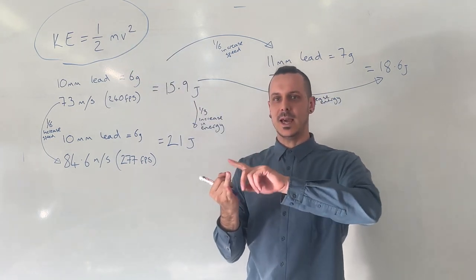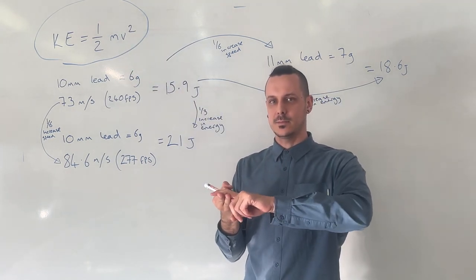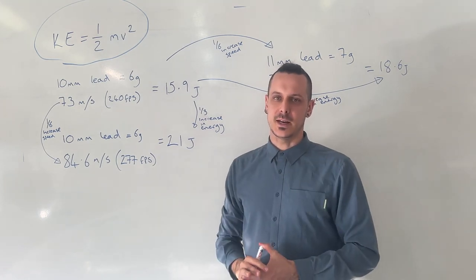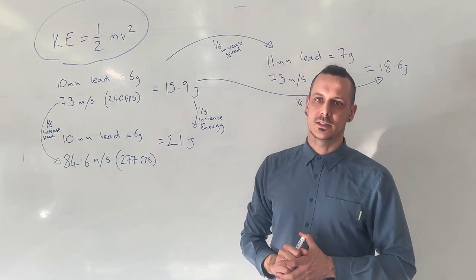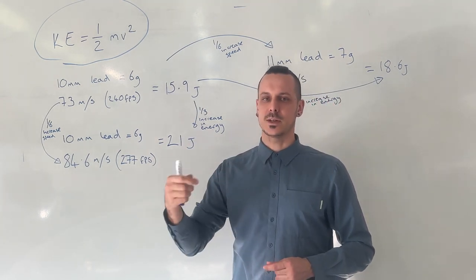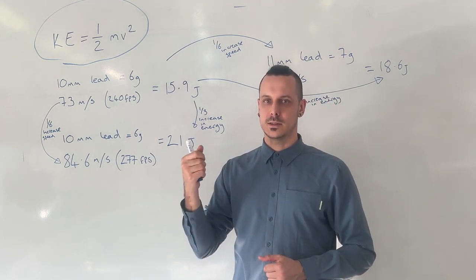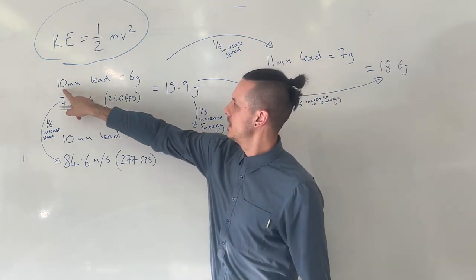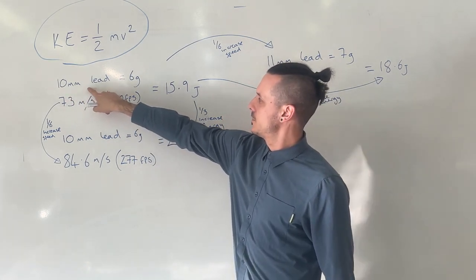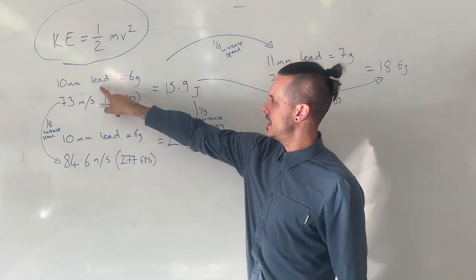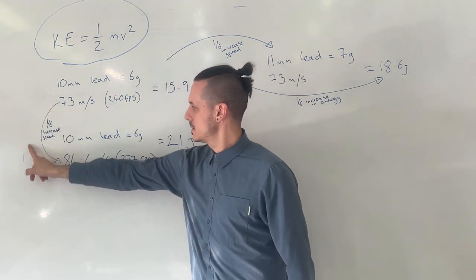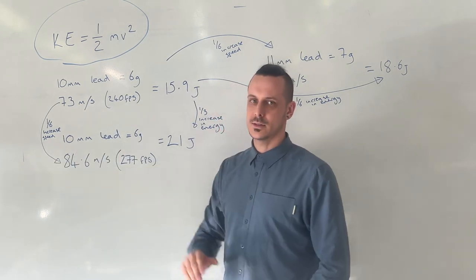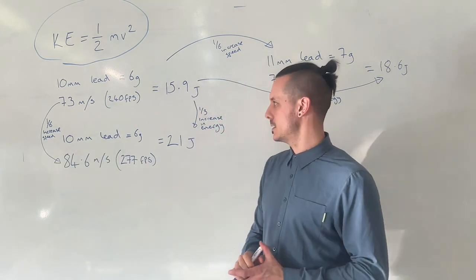So that means if it's big and heavy and moving quickly, then it has a lot of kinetic energy. That makes sense. But one thing that's not particularly obvious is the thing that matters the most for increasing kinetic energy is the speed. Here we have calculations for 10 millimeter lead, and what I've done is I've increased the speed by one sixth.